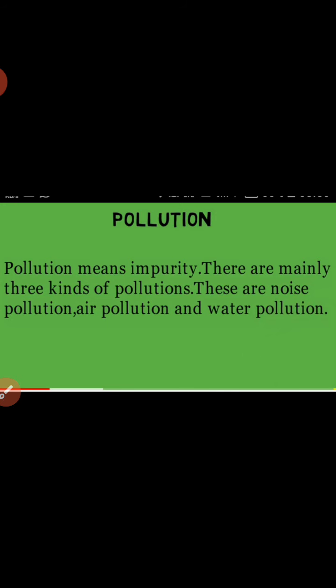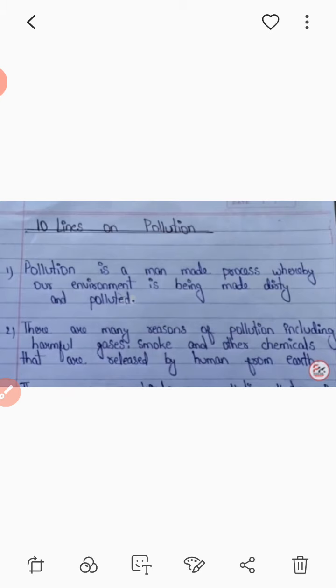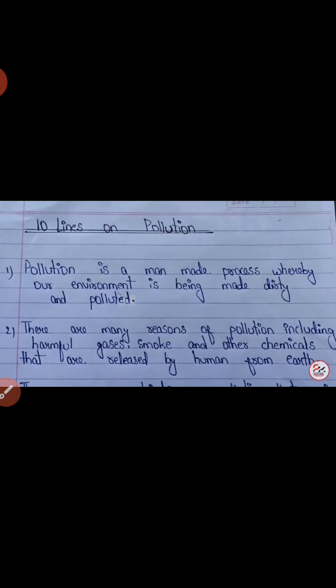Pollution means impurity and it is a man-made process. You can write in the form of 10 lines. Here are your clues: Point 1 — pollution is a man-made process whereby our environment is being made dirty and polluted. Point 2 — there are many reasons of pollution including harmful gases, smoke, and other chemicals that are released by humans.